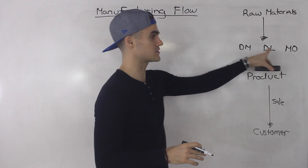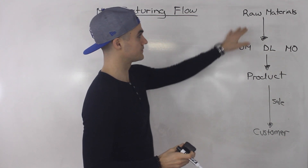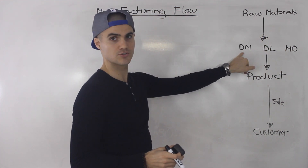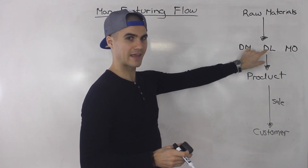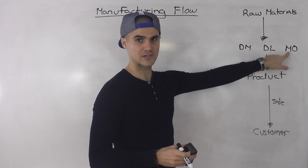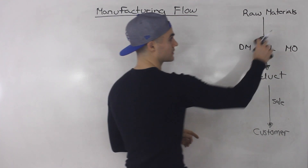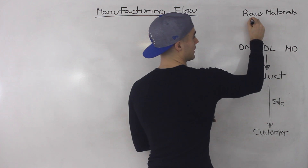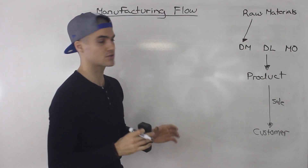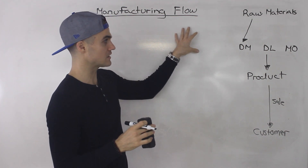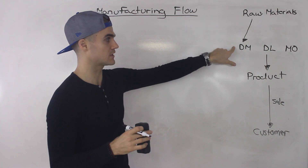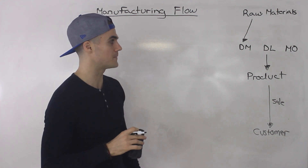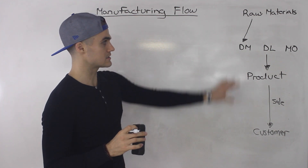That is production split up into three parts. Now, out of all three, raw materials relates most to direct materials. Direct labor is more of an intangible sort of thing, and manufacturing overhead covers costs throughout the factory not directly traced to a product. Raw materials, though, are directly traced to the product. So I'm going to draw an arrow from raw materials to direct materials — you purchase raw materials, put them into production, and they become direct materials.